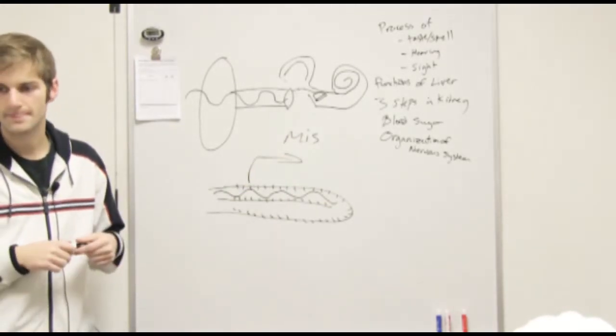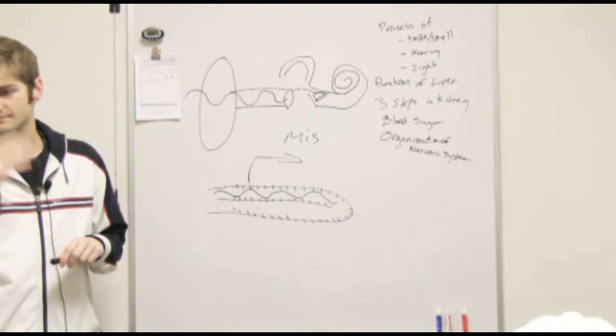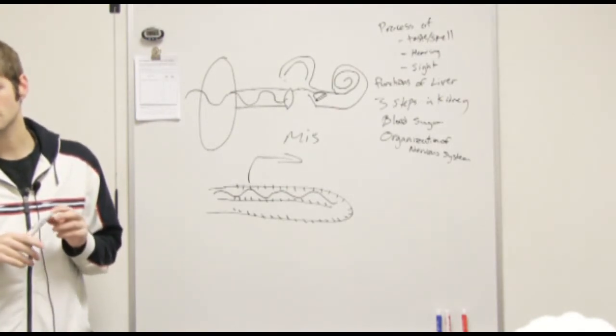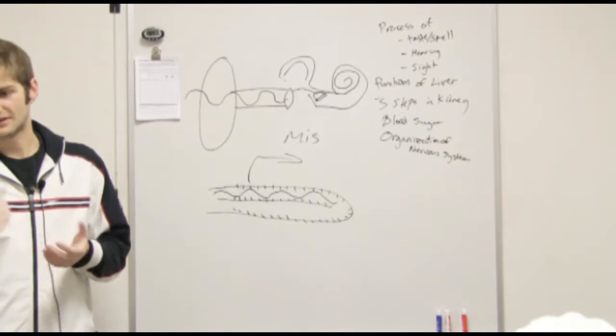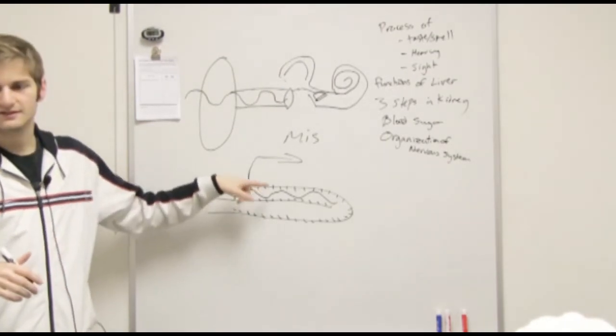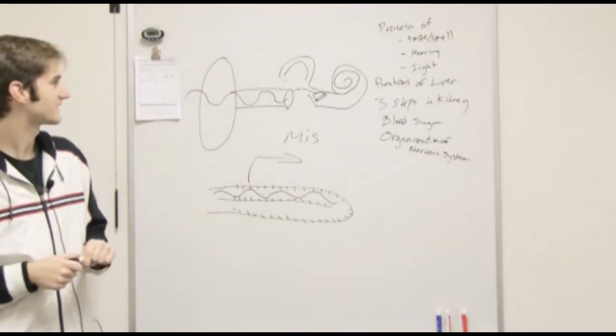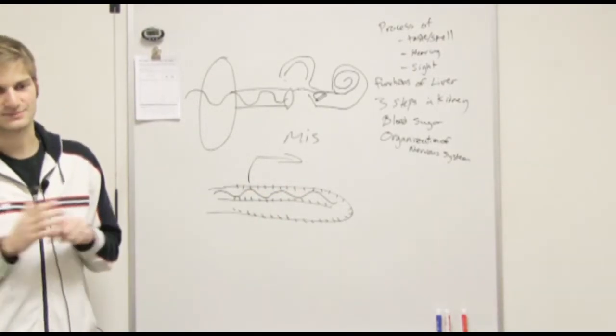So the stapes, stapes hits the oval window. And that sends vibrations into the cochlea. That cochlear fluid right here. That hits the different hair cells. That sends action potentials to the brain.